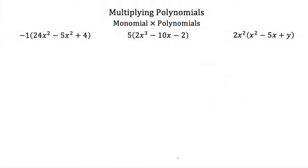Now that we know how to multiply two monomials together, let's talk about multiplying a monomial times a polynomial. We've actually already done this when we subtracted polynomials. Remember, at one point you'd have negative 1 outside the parentheses, and what we did was distribute this negative 1 inside the parentheses by multiplying it with every term inside.